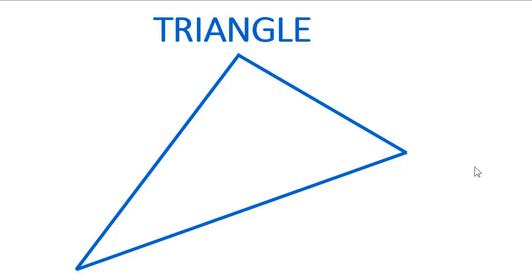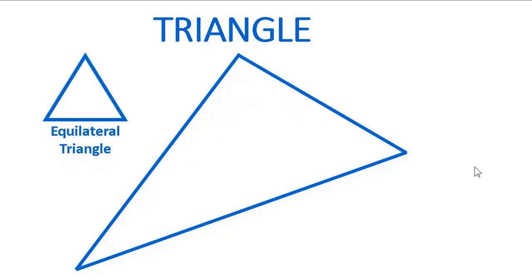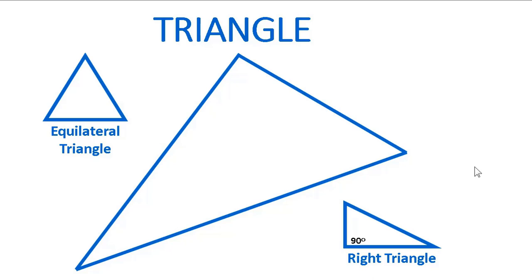Now let's look at some sided figures. We'll start with the triangle. The definition of a triangle is a plane, or flat, figure with three straight sides and three angles. There are special triangles — if all three sides are equal, we have an equilateral triangle. And if there's a 90-degree angle among them — it can only be one, or it wouldn't be a triangle — we call it a right triangle, which happens very often in construction.